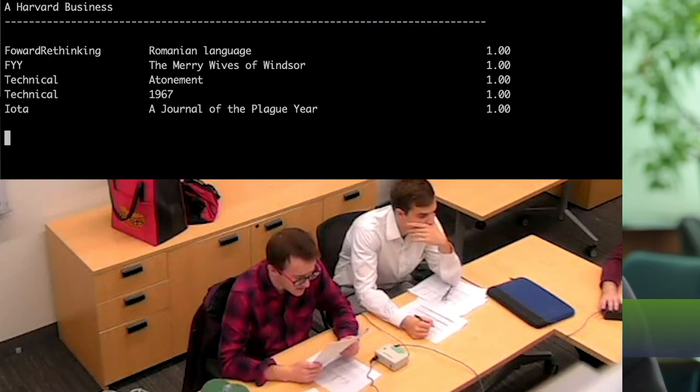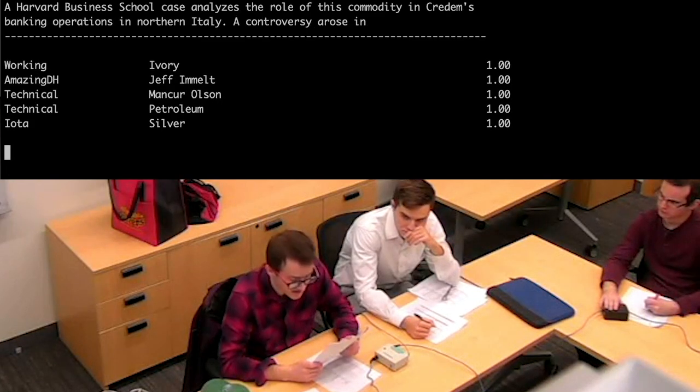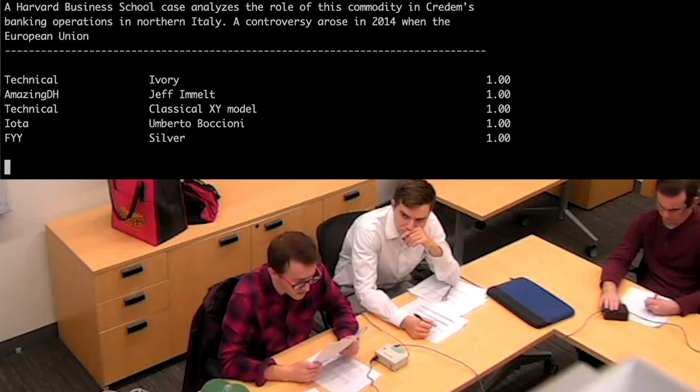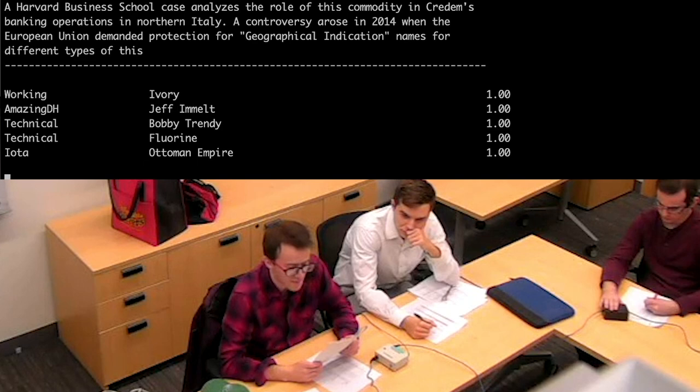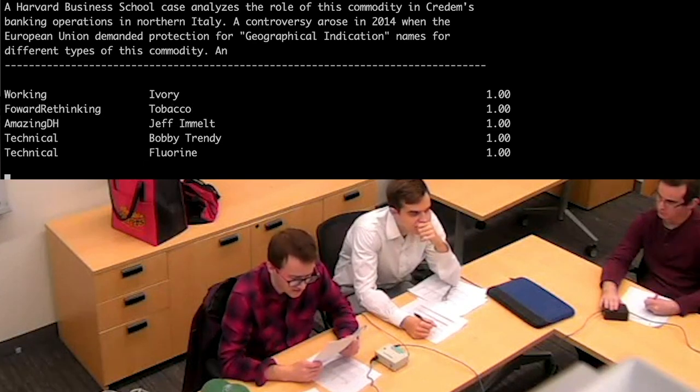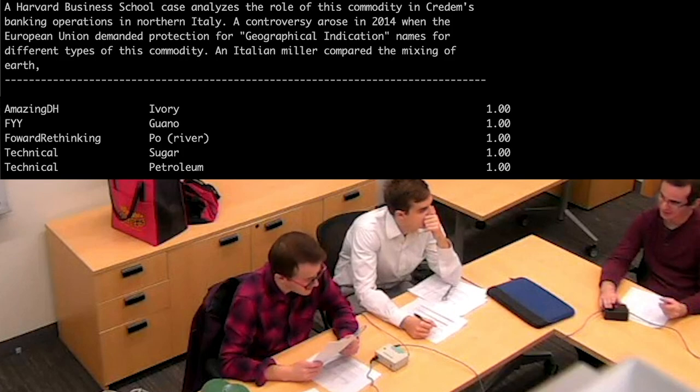A Harvard Business School case analyzes the role of this commodity in Kratom's banking operations in Northern Italy. A controversy arose in 2014 when the European Union demanded protection for geographical indication names for different types of this commodity. An Italian miller compared the mixing of earth, air... Ah, that's cheese.